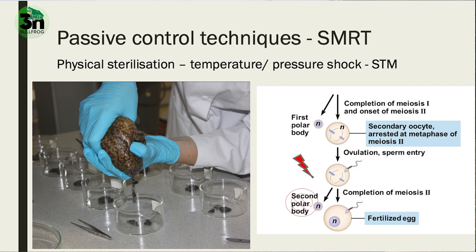But we had some ethical issues regarding the use of chemicals in aquatic ecosystems. That's why we went looking for other techniques to sterilize individuals. Another technique is to induce a temperature or pressure shock on a fertilized egg. This temperature or pressure shock prevents the secondary polar body during meiosis 2 from being extruded from the zygote.